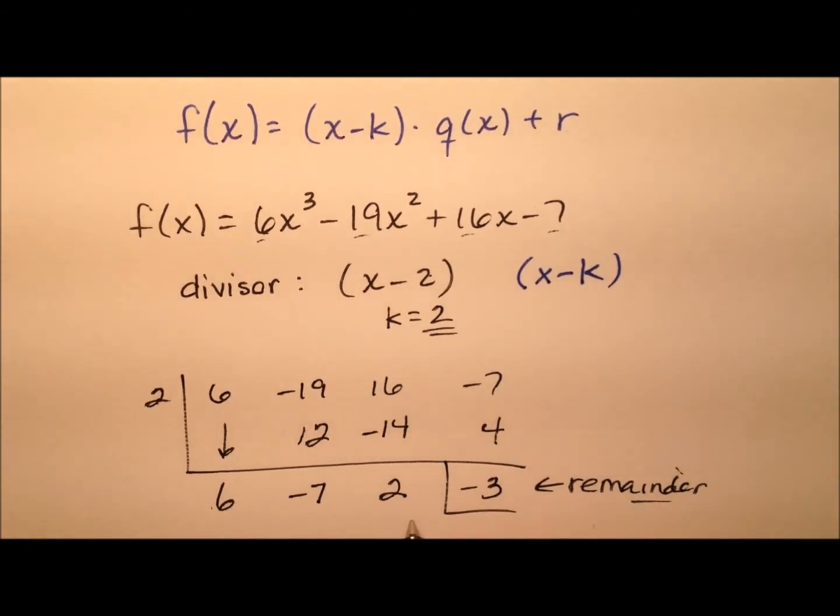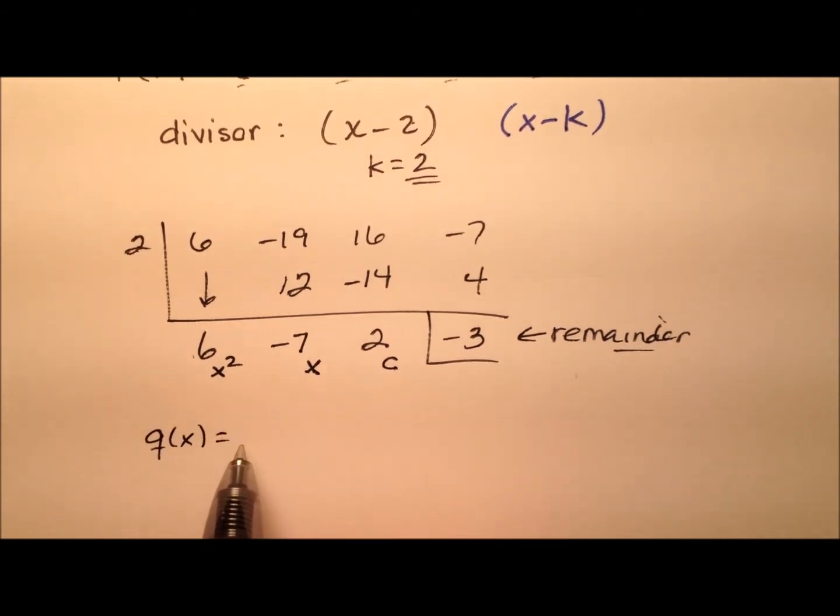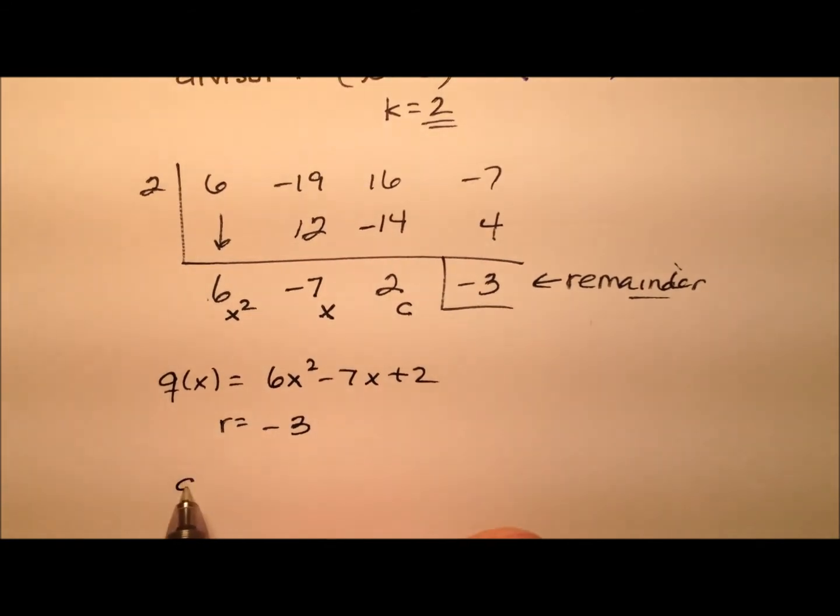Okay, so when I build this back up, here's my constant, my linear term, my linear term, and my quadratic term. So my q(x), which is my quotient, ends up being 6x² minus 7x plus 2. And my remainder then is negative 3. And my divisor that I used at the beginning was that x minus 2.